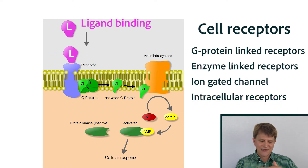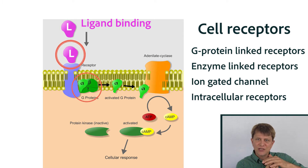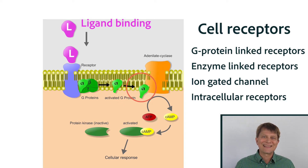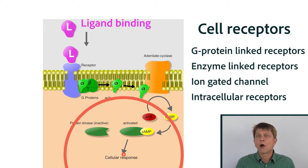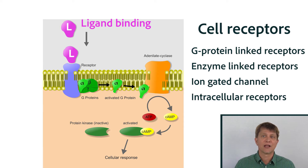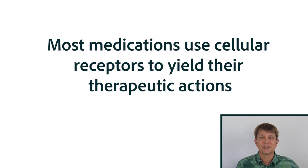As those proteins are bound by the natural ligand, they undergo a conformational change — a change in the structure of the protein — and that results in a cascade of events inside the cell. Therefore, the ligand and the cellular receptors are our way of communicating between one cell and another cell. We'll find out how our medications use those receptors, because most of our medications use cellular receptors for their therapeutic actions.